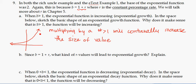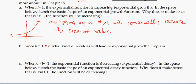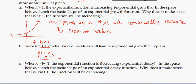Since b equals 1 plus r, if b is greater than 1, then 1 plus r is greater than 1. Solving this inequality algebraically — subtracting 1 from both sides — gives us r greater than 0. So positive values of r are going to give us exponential growth.